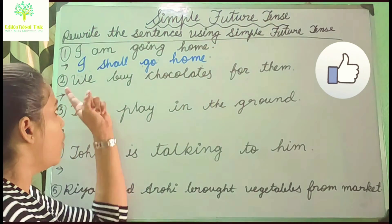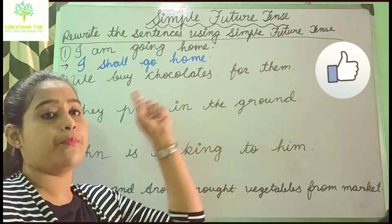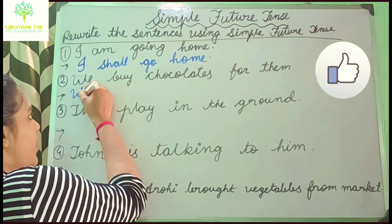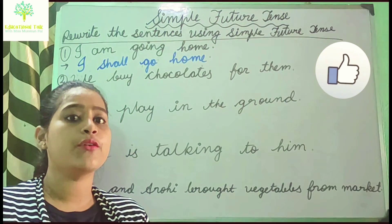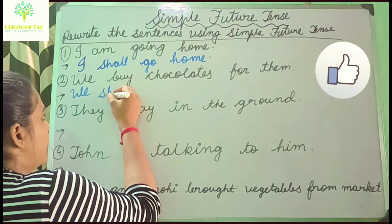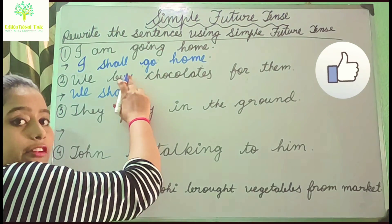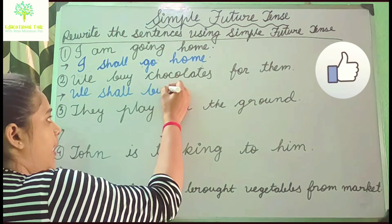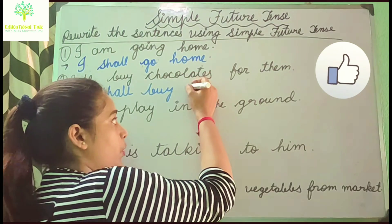Next one: 'We buy chocolates for them.' The subject is 'we', so after 'we' it will be 'shall'. So: 'We shall buy chocolates for them.' Here 'buy' is the V1 form, and 'chocolates for them' is the object.